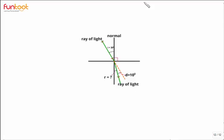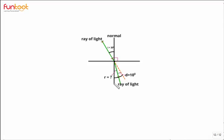Let's do a problem. Here we have a ray diagram of refraction of light. This is the normal, this is the incident ray, and this is the refracted ray. We have to identify a pair of vertically opposite angles. The pair of vertically opposite angles will be this angle and this whole angle — because they have a common vertex, no common arms, and each pair of arms forms a straight line.